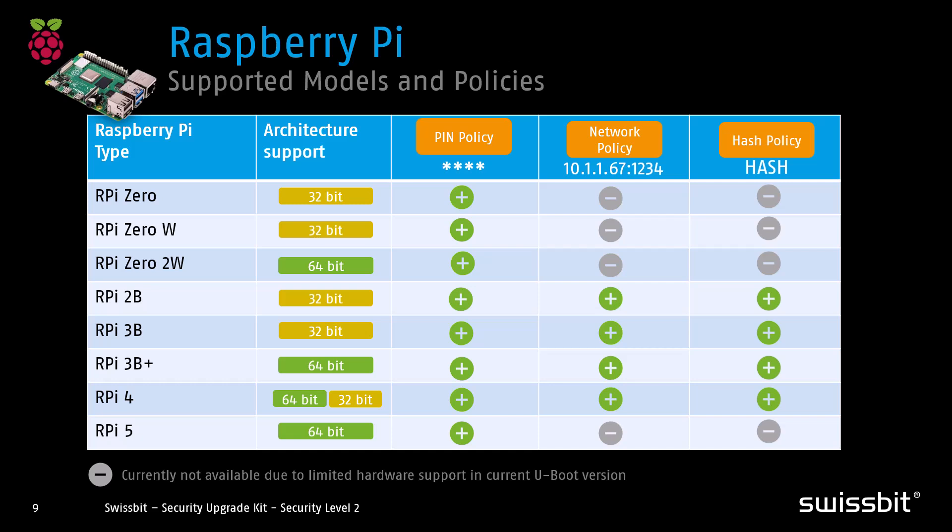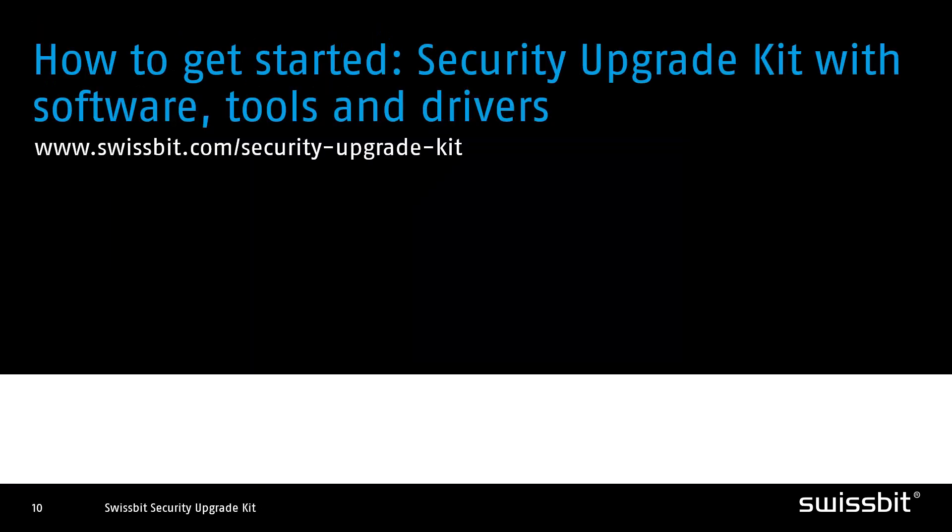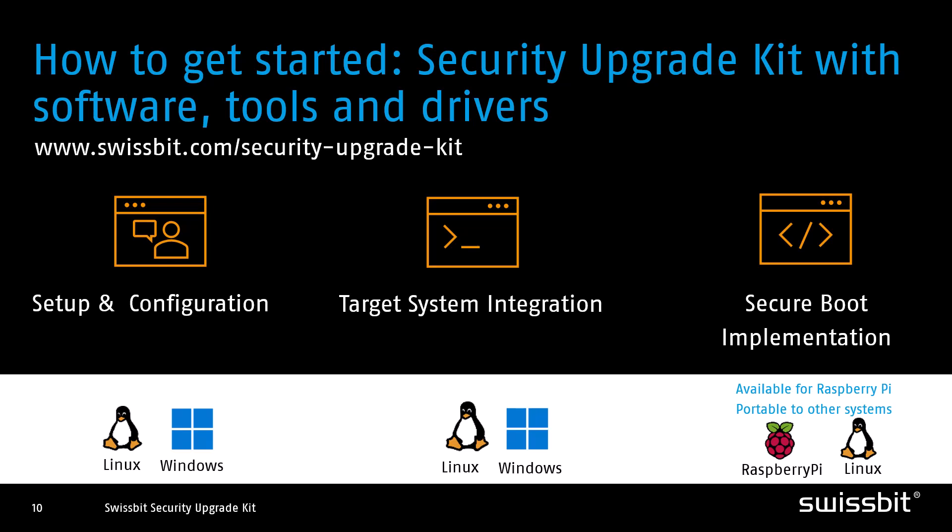However, the Raspberry Pi Zero variants and the Raspberry Pi 5 currently only support the PIN policy. This limitation on the Raspberry Pi 5 is due to our reliance on open-source community contributions for U-Boot, which currently lacks network interface support. We're actively working to address this, with plans to introduce further policy support in future updates. For more information, including the support matrix, setup tools, code, and reference guides, visit swissbit.com/security-upgrade-kit.